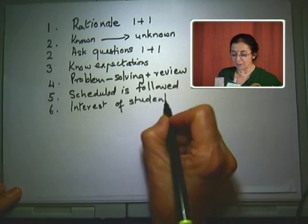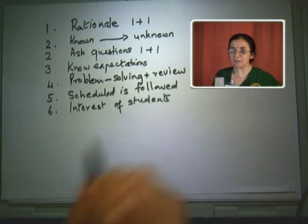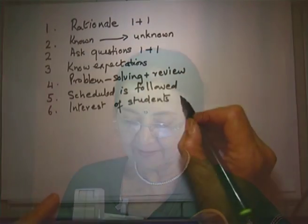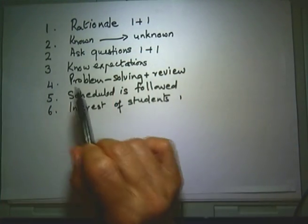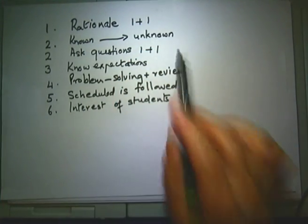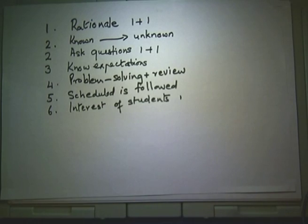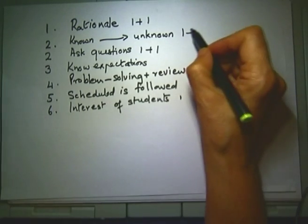Another point raised is that students are allowed to follow their interests. Item Q — new ideas related to established ones — is confirmed as already on the list and noted as one of the most popular items across groups.